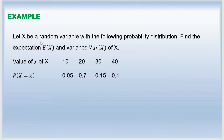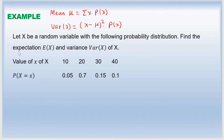Here is our first example. Let x be the random variable with the following probability distribution. Find the expectation E(x), or expected value, and the variance of x. To find the expectation or mean, we use the formula: mean equals sum of x times P(x). We already have x and P(x), so next we need to find x times P(x).